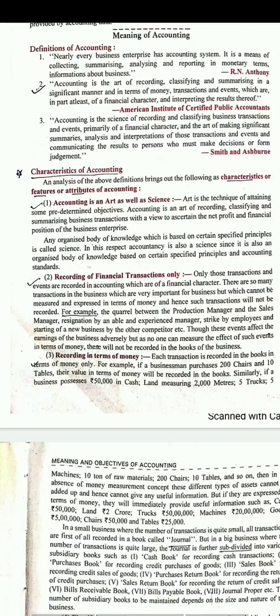Seventh objective: to provide information to various parties। Accounting का यह last objective है कि जितनी भी result या information होती है वो अलग-अलग parties को communicate कर दी जाती है। Government accounts check करके decide करती है कि कितना tax लगाना है। Bank financial position check करके decide लेता है कि loan देना है या नहीं। Employees भी accounts देखते हैं कि profit बढ़ रहे हैं तो bonus या increment मिलेगा या नहीं।